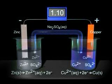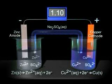The reaction in the left-hand compartment is oxidation of zinc. The electrode at which oxidation occurs is called the anode. The reaction in the right-hand compartment is reduction of copper. The electrode at which reduction occurs is called the cathode.